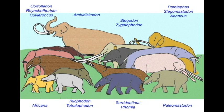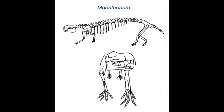Early in the Cenozoic, the first elephant relatives seemed to have been small, semi-aquatic animals with small trunks and only moderately enlarged incisors.